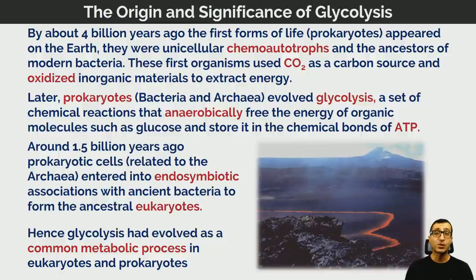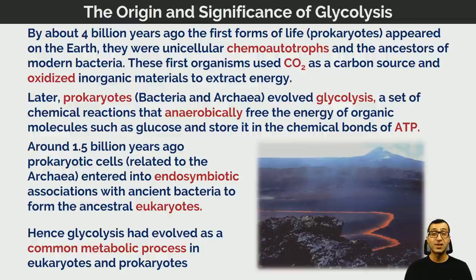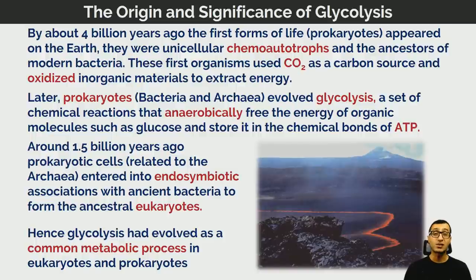By about 1.5 billion years ago, prokaryotic cells related to archaea entered into an endosymbiotic association with ancient bacteria to form the ancestral eukaryotes. This refers to the endosymbiont hypothesis — the idea that organelles such as chloroplasts and mitochondria may originally have been free-living prokaryotic organisms incorporated into early eukaryotic cells. Rather than being digested, they released usable energy as ATP for those eukaryotes, and in turn the host provided shelter.